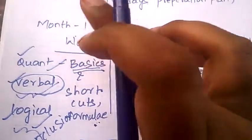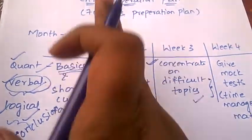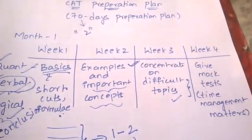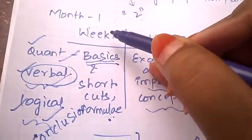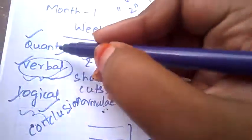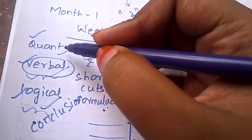Let's see what is the plan for Month 1. We are dividing Month 1 into four weeks: Week 1, Week 2, Week 3, and Week 4. Now let's start with what you need to do in Week 1. There are three different sections from which questions will be asked for CAT, and they are quantitative aptitude, verbal, and logical.